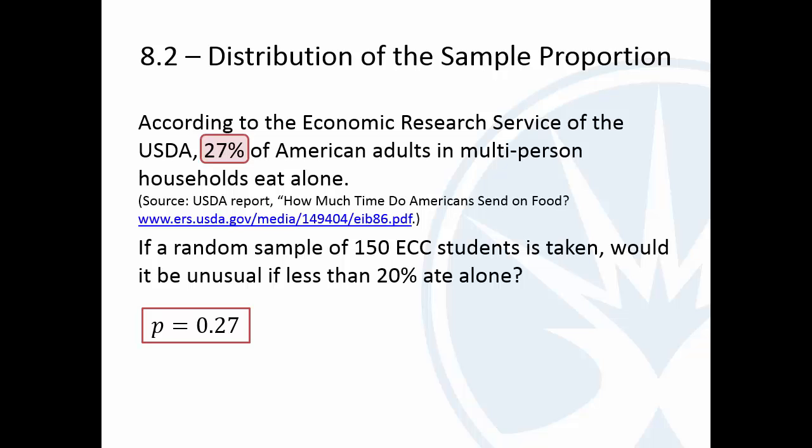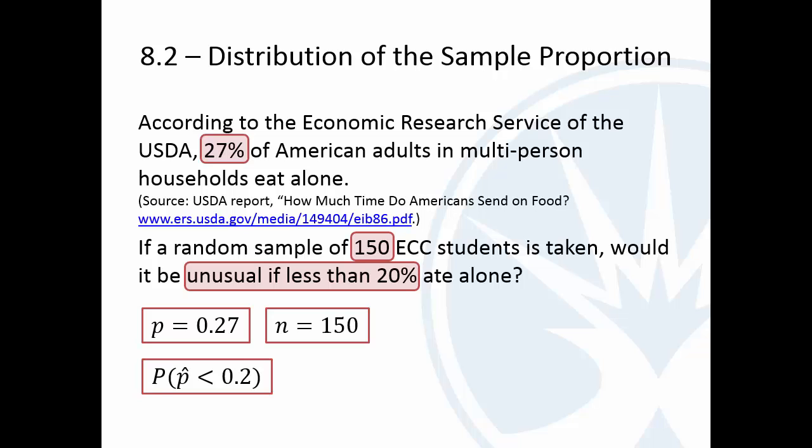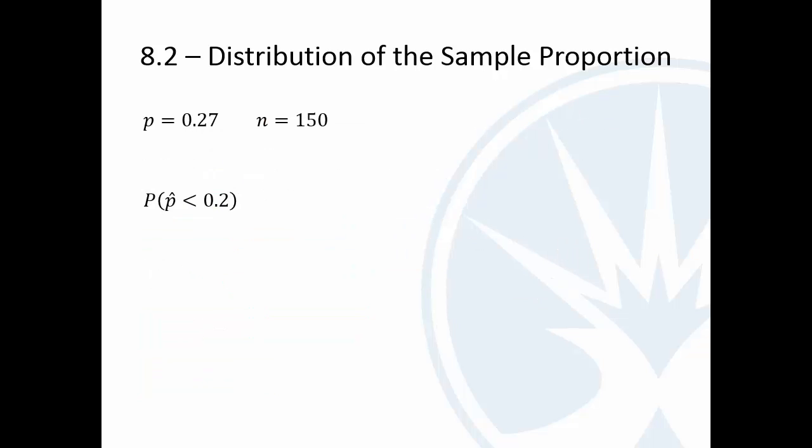Well, our population proportion is 0.27. We have a sample size of 150. And we're going to find what is the probability of getting a sample proportion of less than 0.2. So the way we're going to do this is we are going to actually treat it like this normal curve here, kind of that central limit theorem, but for proportions.